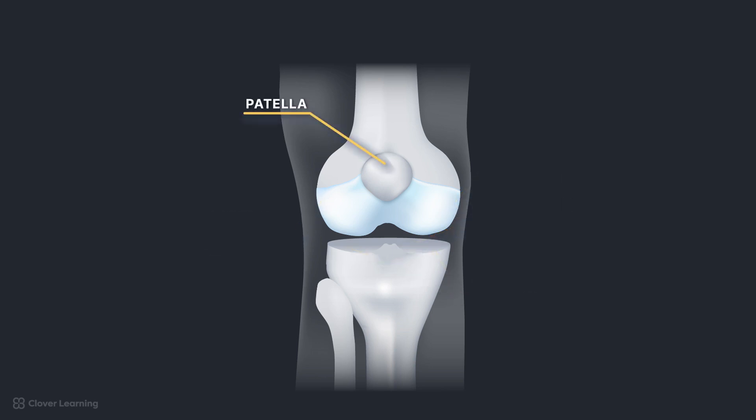The patella or kneecap is the largest sesamoid bone in the body, embedded in the tendon of the large quadriceps femoris muscle. It is a flat, triangular bone approximately two inches in diameter that articulates only with the femur. Unlike most other structures in the body, the apex of the patella is located at the inferior border, approximately a half inch above the knee joint, and the base is the superior border. The patella protects the anterior surface of the knee joint.